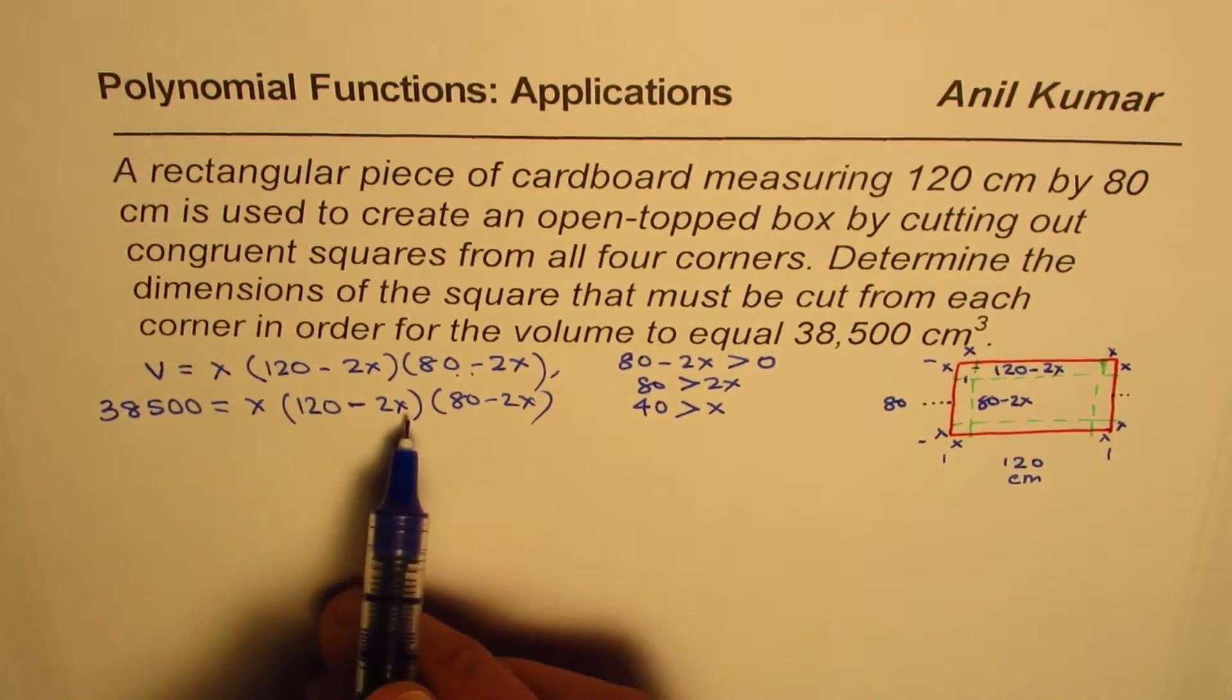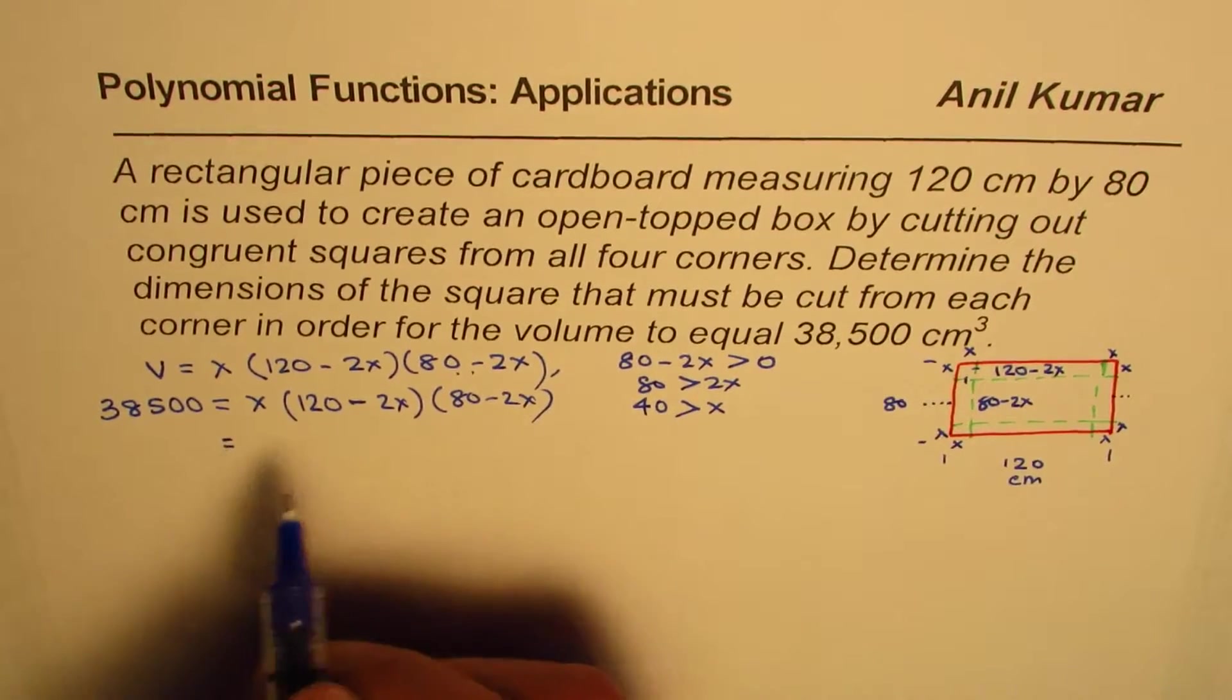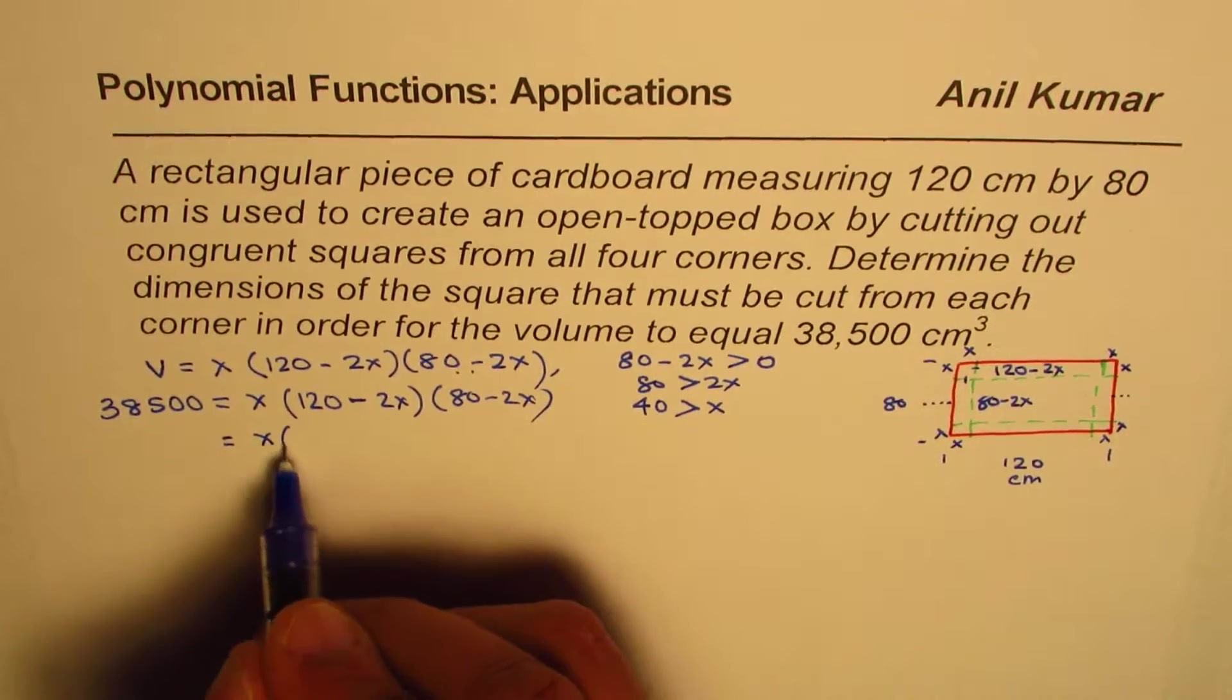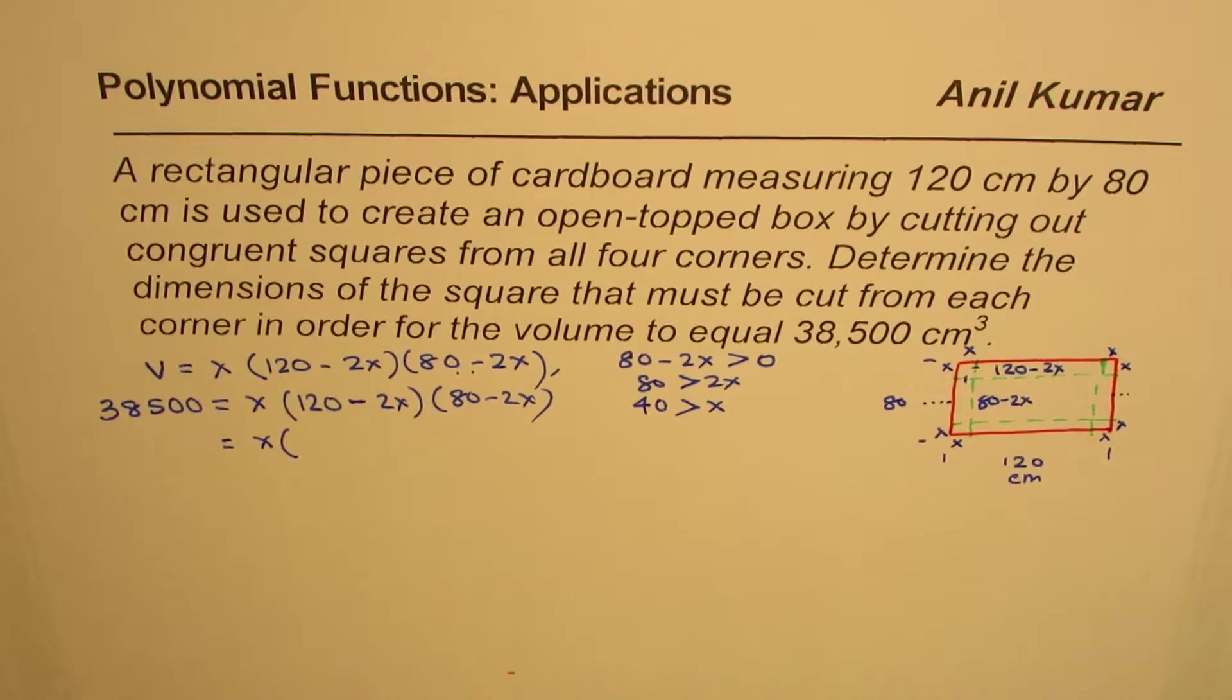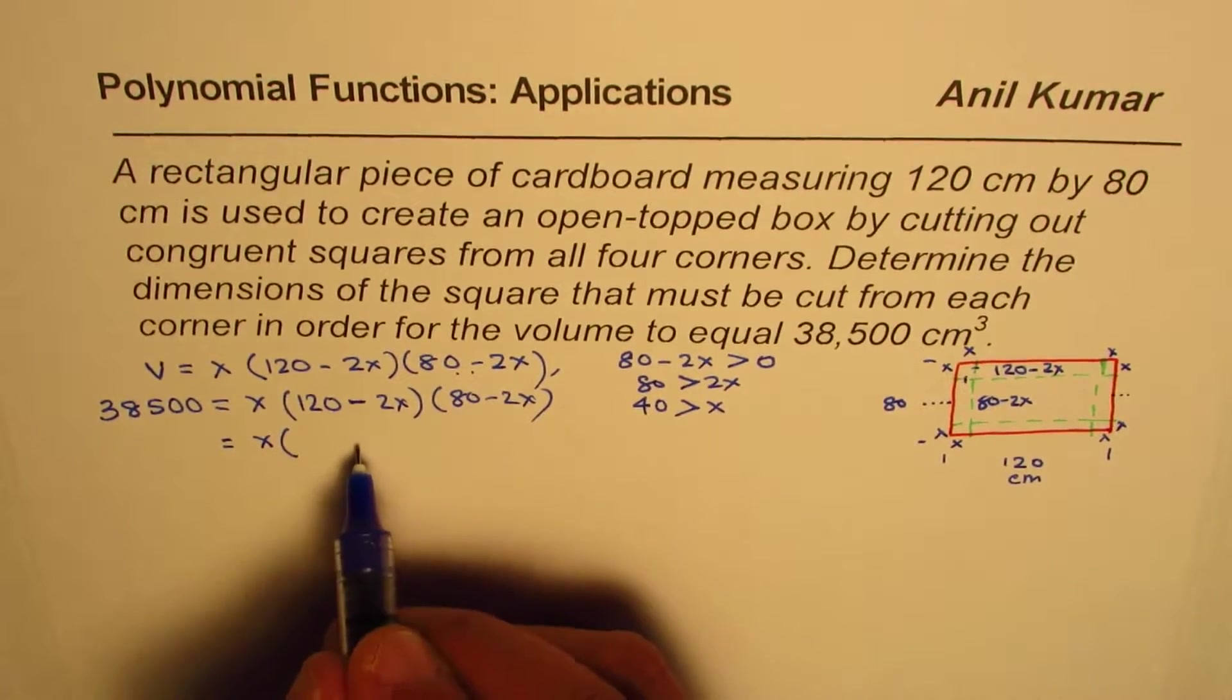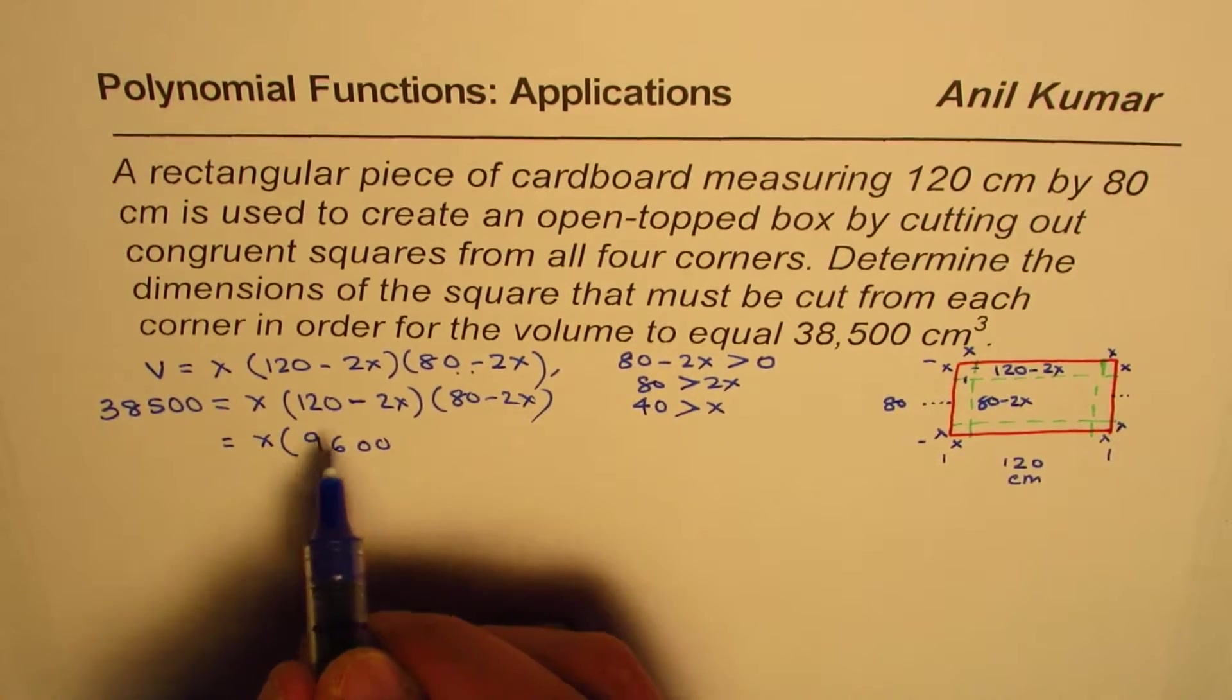Now, let's try to figure out what the value of X is. So we'll bring all these terms to one side. Let me expand this first. We'll do X times, multiply them one by one. So let's do 80 times 120. That is 2 zeros, 8 times 2, 16, 6 and 1, 9600.